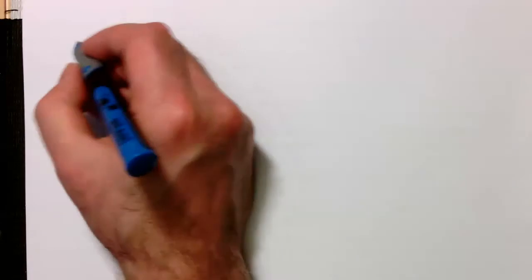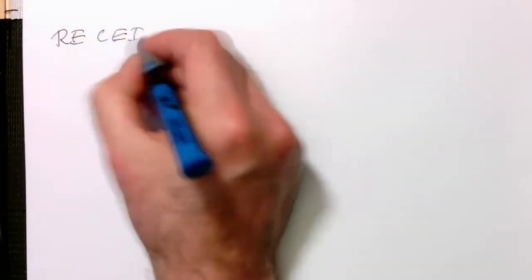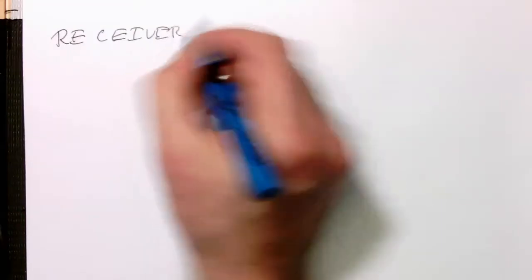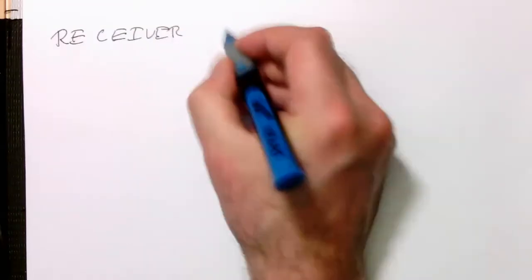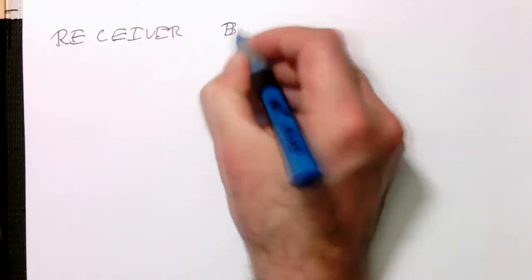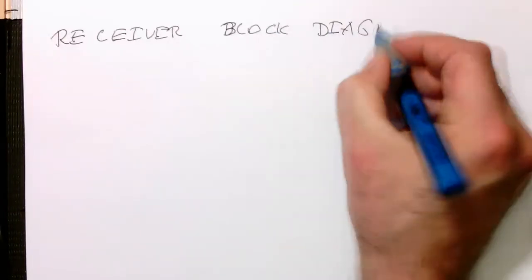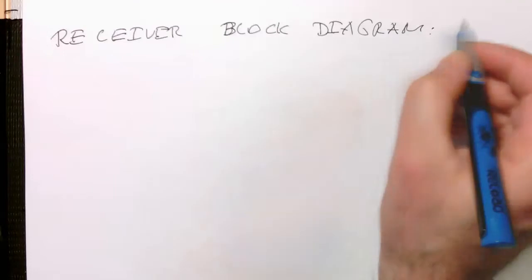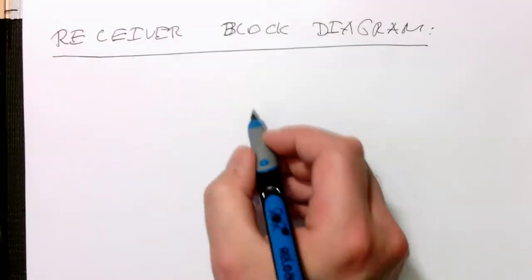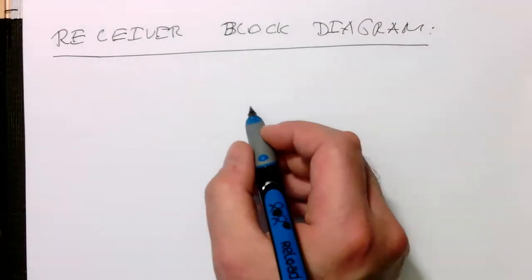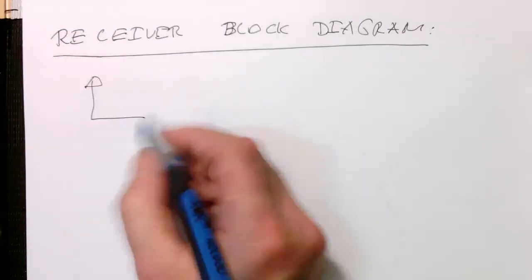So, how does it now work on the receiver side with cyclic prefix? Receiver block diagram. How does it look like here? And also the idea of how we decode that. Let's just have a look here at the block diagrams.